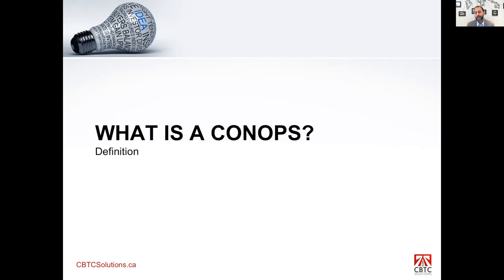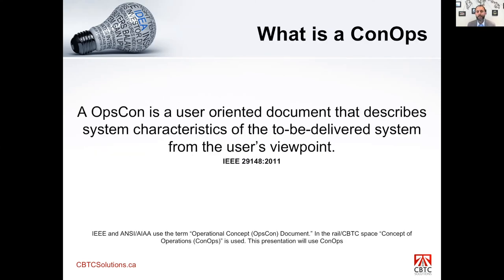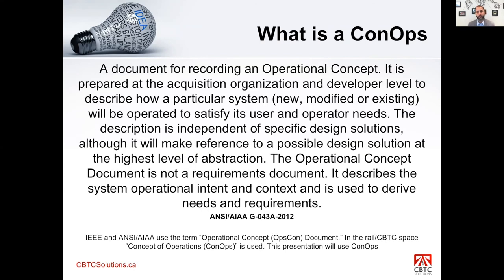What is a CONOPS? Per the IEEE definition, it is a user-oriented document that describes system characteristics of the to-be-delivered system from the end user's viewpoint. Essentially, you are trying to understand what frontline personnel need and what their priorities and concerns are to do their job. The ANSI definition says the same thing: we need to extract frontline personnel's needs and understand them to make sure we can address their concerns.